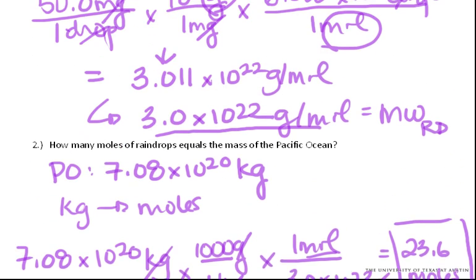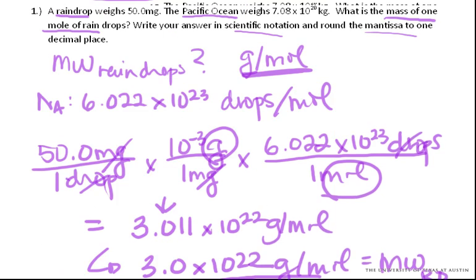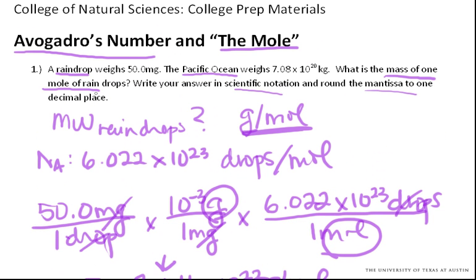So the concepts are still the same. You can use Avogadro's number to relate units of mass and moles in individual atoms, whether or not you have chemicals and atoms or things like raindrops in the Pacific Ocean. It works the same.